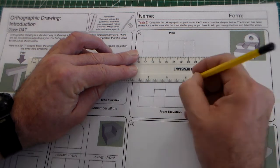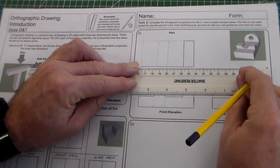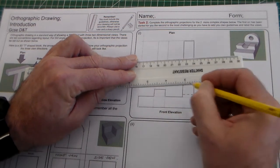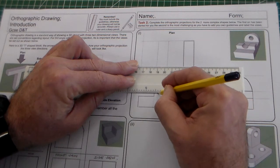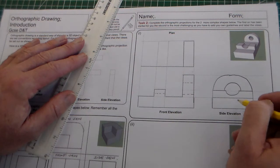I need to project across some dotted lines here which would be for hidden detail. And also dotted lines here. So we've got our front elevation completed.